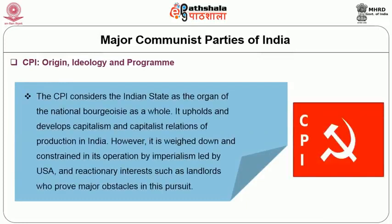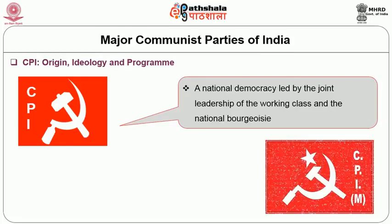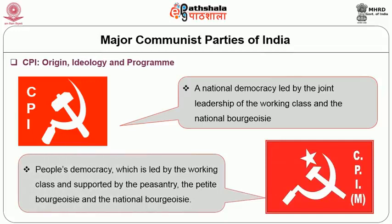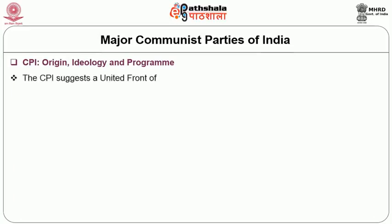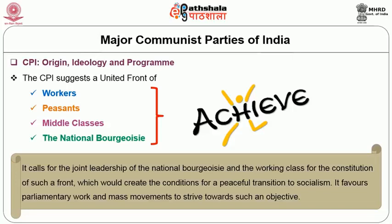The CPI considers the Indian state as the organ of the national bourgeoisie as a whole. It upholds and develops capitalism and capitalist relations of production in India. However, it is weighed down and constrained in its operation by imperialism led by the U.S. and reactionary interests such as landlords, who prove major obstacles. The CPI argues for a national democracy led by the joint leadership of the working class and the national bourgeoisie, while the CPI-M argues for people's democracy which is led by the working class and supported by the peasantry, the petty bourgeoisie, and the national bourgeoisie. The CPI suggests a front of workers, peasants, middle classes, and the national bourgeoisie to achieve the alternative it seeks, calling for joint leadership of the national bourgeoisie and the working class to create conditions for a peaceful transition to socialism. It favors parliamentary work and mass movements to strive towards such an objective.